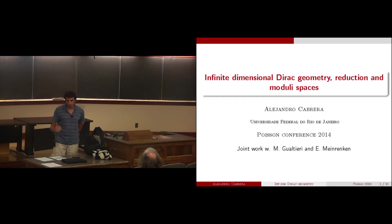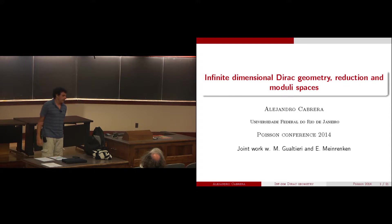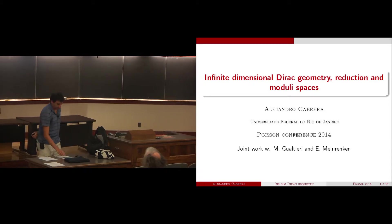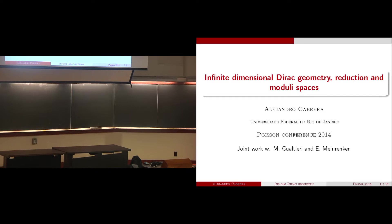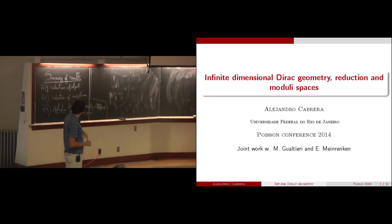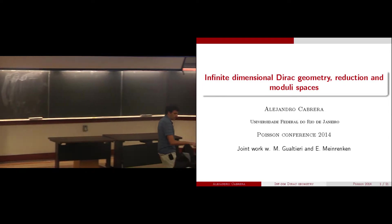I noticed that my talk will have non-trivial intersection with several other talks at this conference. I will be speaking about some joint work with Marco Gualtieri and Eckhart Meinrenken, and I will try to focus more on ideas than technical parts. If you want a summary of where I'm heading, I'm heading at these three results: reduction of certain objects from infinite dimensions to finite dimensions, morphisms between them, and an application to geometry on Lie groups and moduli spaces.